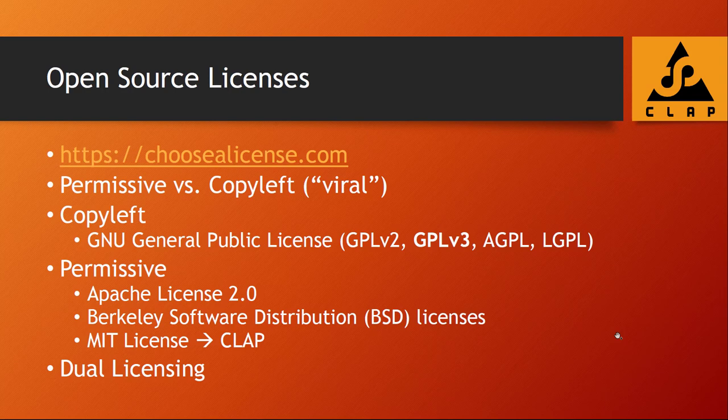Some basics you absolutely need to understand: the difference between a permissive versus a copyleft open source license. The copyleft ones are mainly from the GNU community — the GNU General Public Licenses. They basically say: if you use that source or library, or if you make changes, you have to make all your code available. So if you take a library into your project, you also have to make available all your own source code, which is normally not what you want as a company.